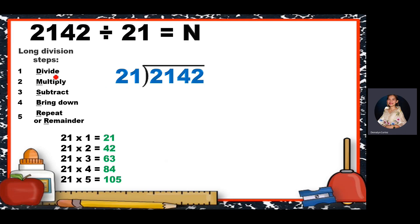I have here the steps: divide, multiply, subtract, bring down, repeat, or remainder. I also put here the multiplication table of 21 so that it would be easier for us to solve. You can also do repeated addition if you need to, or do trial and error — like 21 times 4, 21 times 5, 21 times 6. Since we have a 2-digit divisor, we will also use a 2-digit number from the dividend.